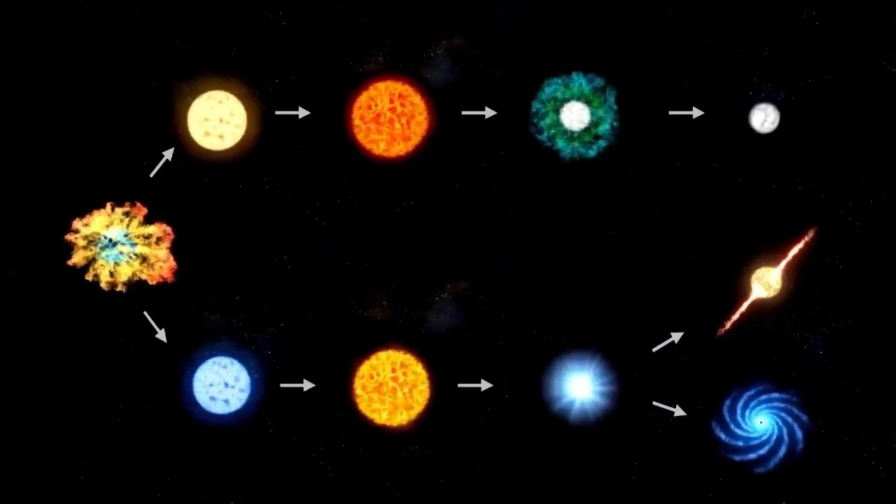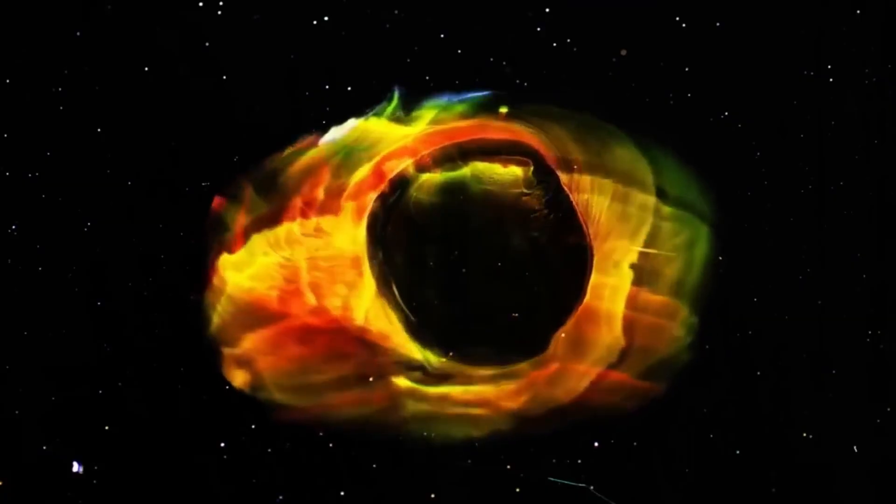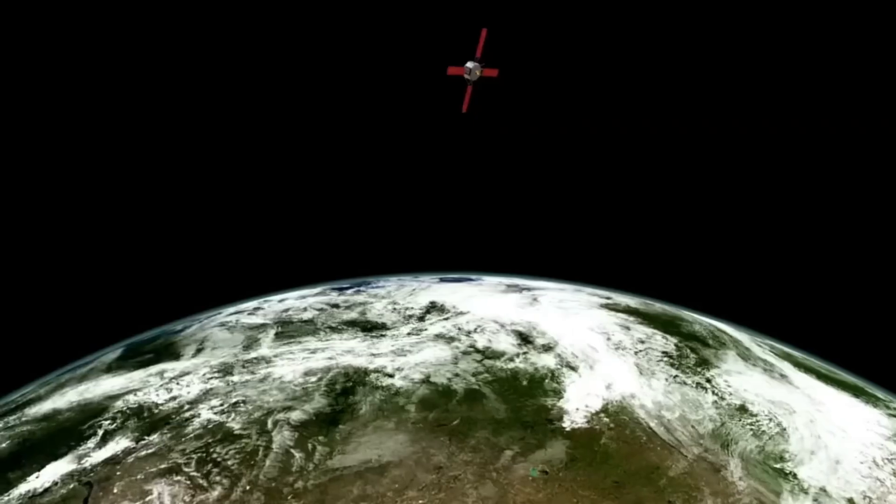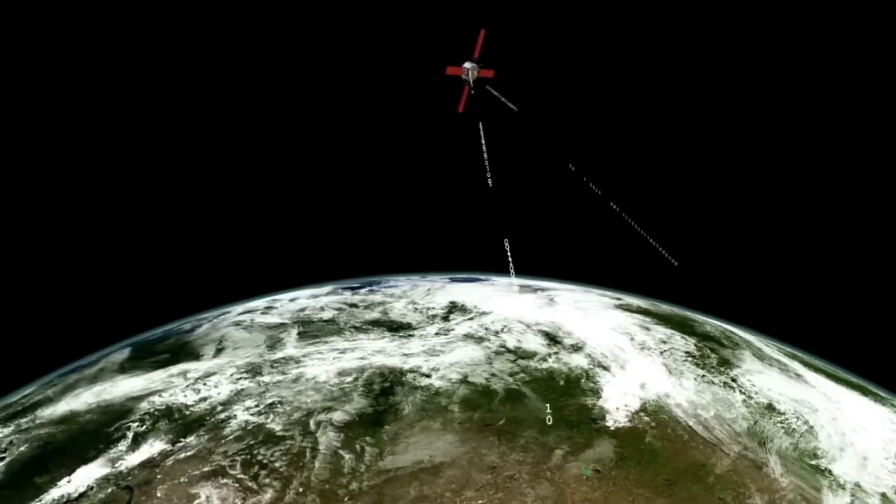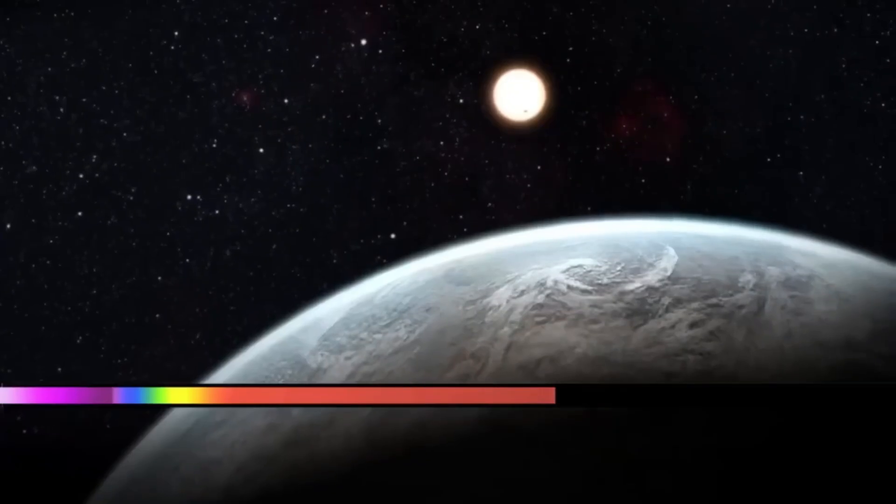Betelgeuse is a red supergiant much more distant than it appears from Earth, more than 640 light years away. Although this distance may not seem significant at first, in cosmic terms it is immense.